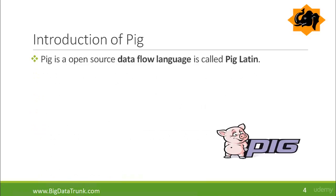Pig is an open source data flow language and it is called Pig Latin. Data flow language means that it allows users to describe how data from one or more inputs should be read, processed and then stored to one or more outputs in parallel.